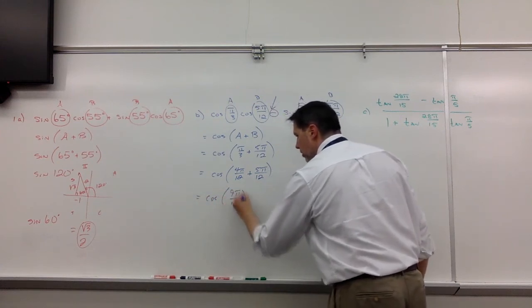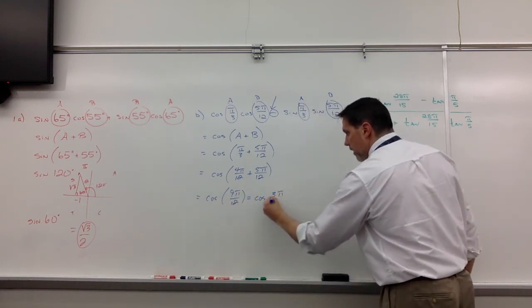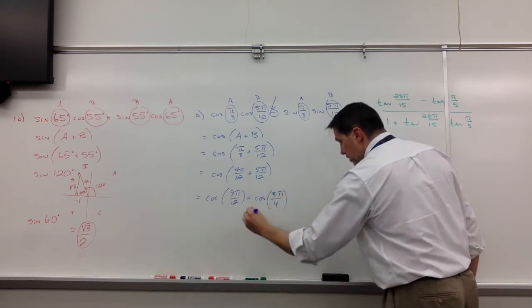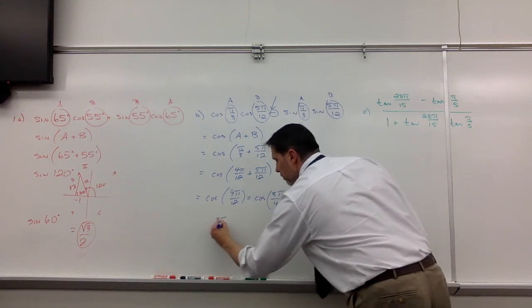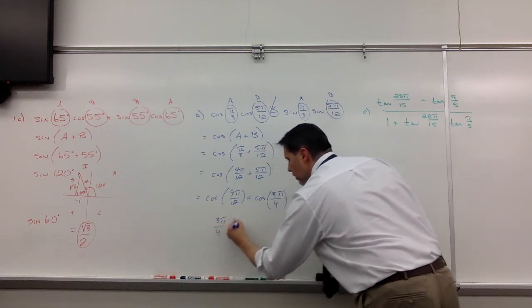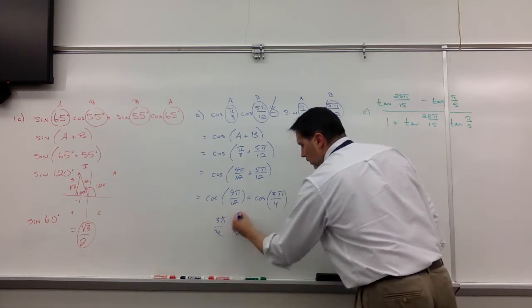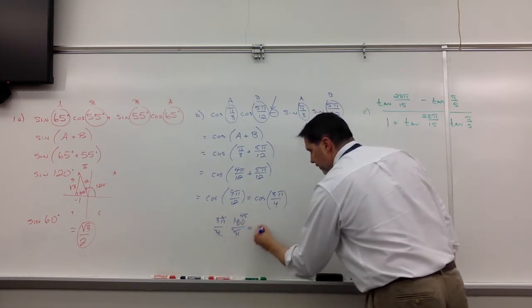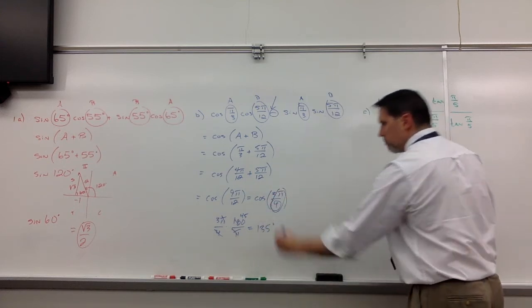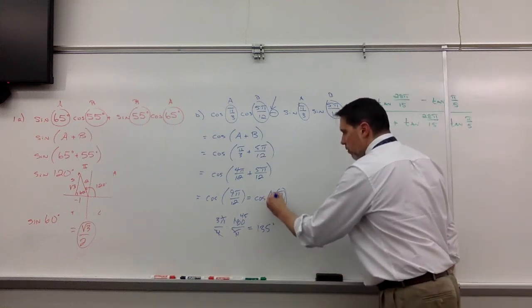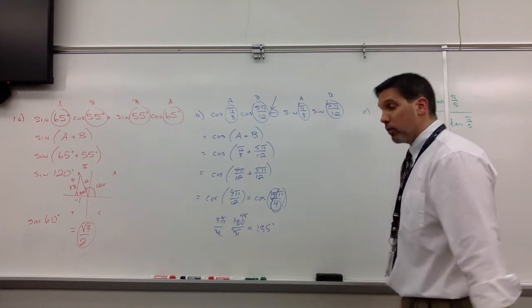Or more simply, the cosine of 3π/4. Okay, the next question is, what is 3π/4? Well, if you remember, 3π/4 multiplied by 180 over π, we're looking at 135. Another way to do this is think of π/4 as 45. We're looking for 3 of those. 3 of those 45-degree angles. That's 135 degrees.